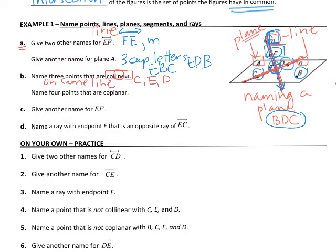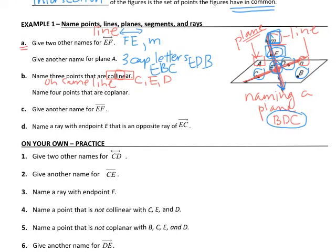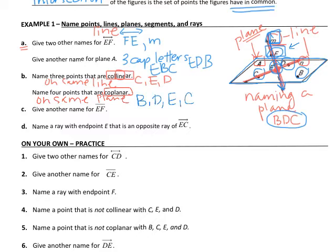Name four points that are coplanar. Coplanar indicates that all of the points lie on the same plane. The plane we're talking about is plane A. Point F is not on the plane because it's up in the air, and A is not a point. So the other four points on the plane — B, D, E, and C — all lie within the plane.